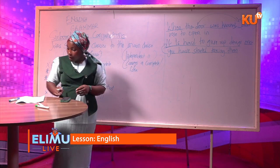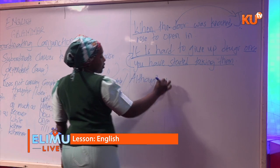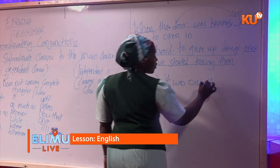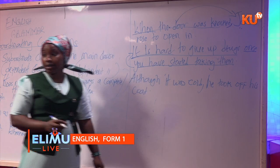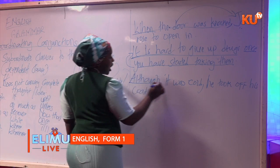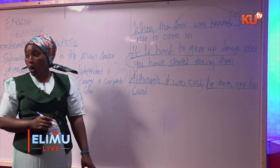Another example using a different subordinating conjunction: 'Although it was cold, he took off his coat.' In this case, 'although' is the subordinating conjunction and 'although it was cold' is the subordinate clause. This clause depends on the main clause to convey its meaning.